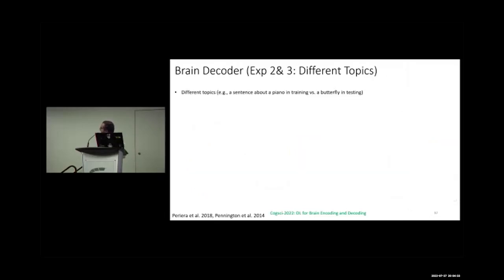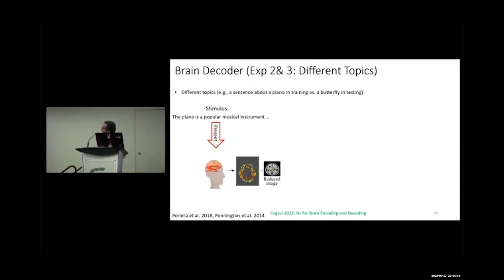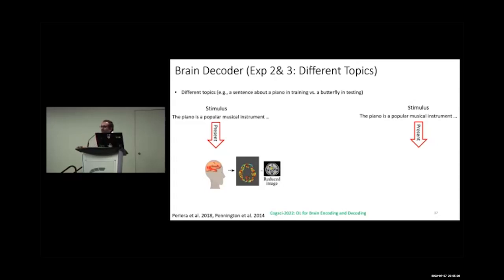For experiments two and three they subdivided into three models. The first is different topics: training uses one topic (e.g., apartment-related sentences) while testing uses a completely different topic (e.g., butterfly sentences that the model has never seen in training).